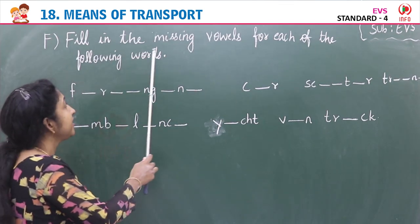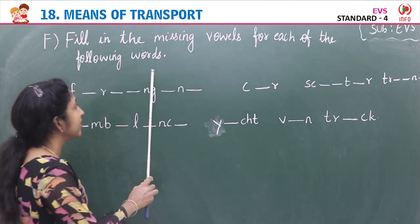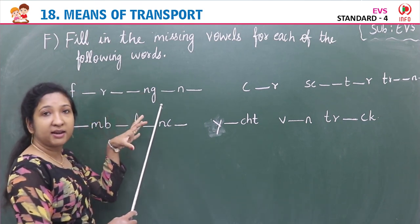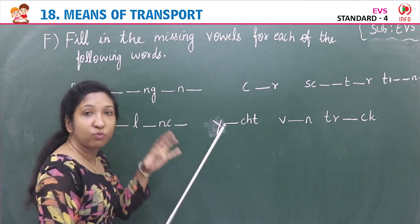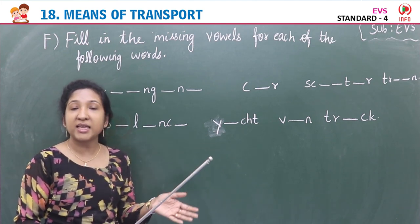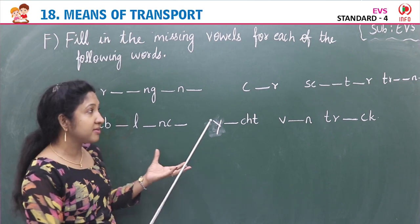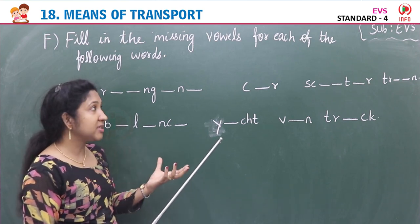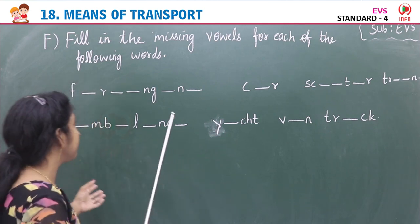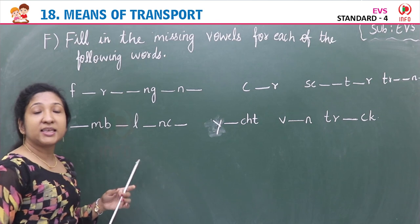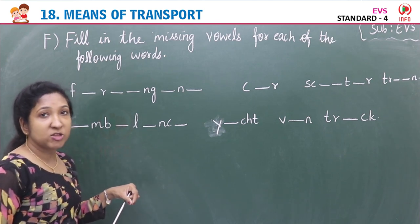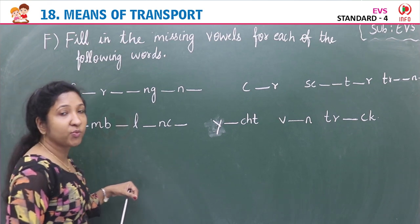Exercise F: Fill in the missing vowels for each of the following words. Vowels are A, E, I, O, U. Images are given — identify the vehicle and fill in the missing vowels. First image is a fire engine — people call a fire engine when a building catches fire; it rushes and puts out fire using water. Spelling: F-I-R-E E-N-G-I-N-E. Missing vowels are I, E, I, E.